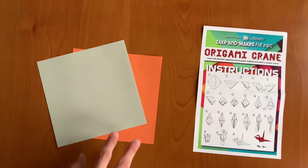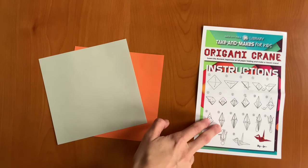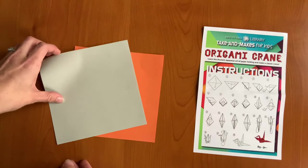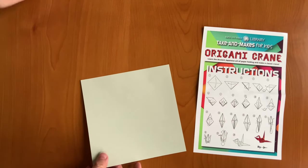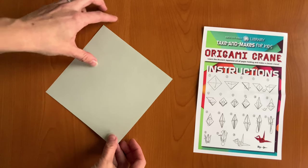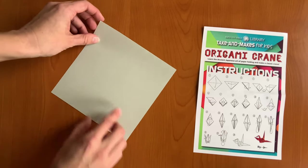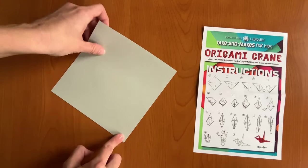In your kit, you should have two pieces of origami paper and your picture instructions. Let's go ahead and get started with the first piece. First you're going to fold your paper diagonally, so from one corner to the opposite corner.